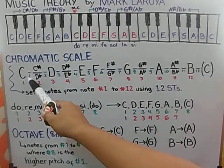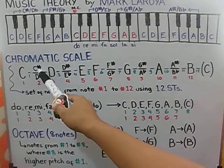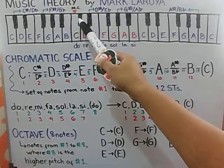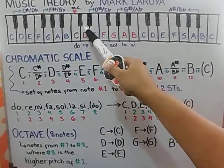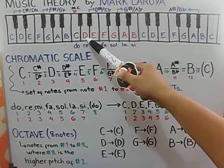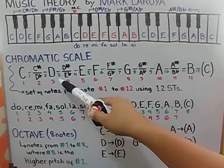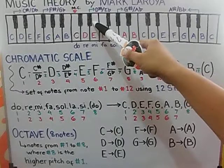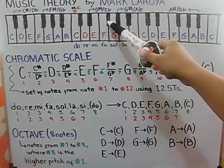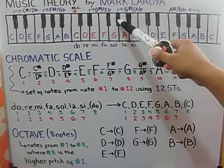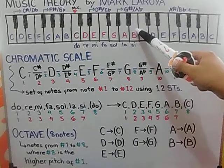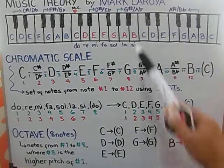First semitone, after the first semitone, we landed to C sharp or D flat. So, this is our note number 2. And then, another semitone or half step or one step is D. Number 4 is D sharp or E flat. Number 5, number 6, number 7, number 8, 9, 10, 11, 12. So, this will be our note 12.